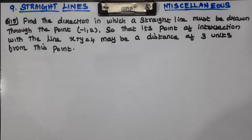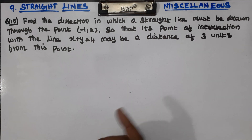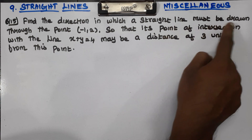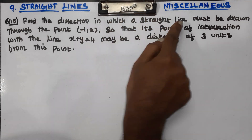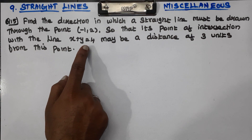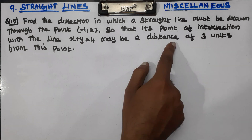Hello students. Welcome to chapter number 9, Miscellaneous, question number 15. Find the direction in which a straight line must be drawn through the point (-1, 2), so that its point of intersection with the line x plus y equals 4 is at a distance of 3 units.